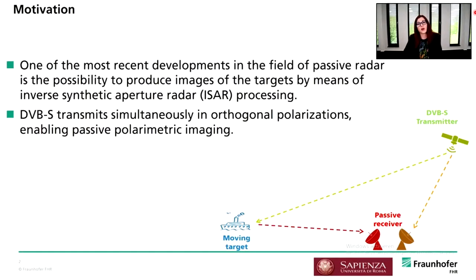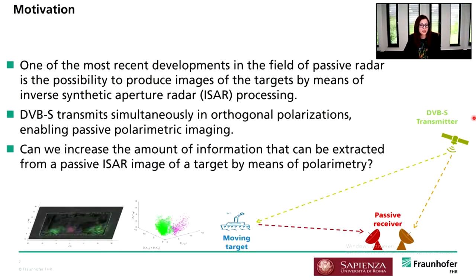One of the most recent developments in passive radar is the possibility to produce images of a target by means of inverse synthetic aperture radar processing — so-called ISAR processing. Considering DVB-S, the digital video broadcasting satellite transmitters, as illuminators of opportunity, we can take advantage of their simultaneous transmission in orthogonal polarization in order to enable passive polarimetric imaging. The key question today is: can we increase the amount of information extracted from a passive ISAR image of a target by means of polarimetry, as has already been done in the active case?